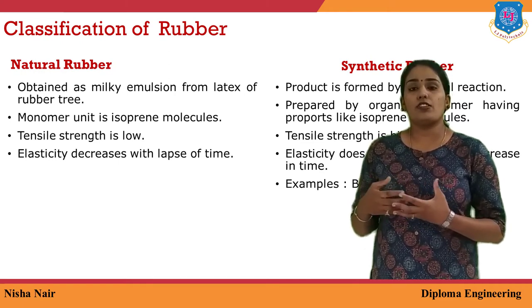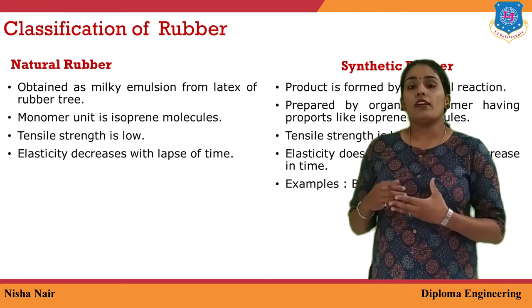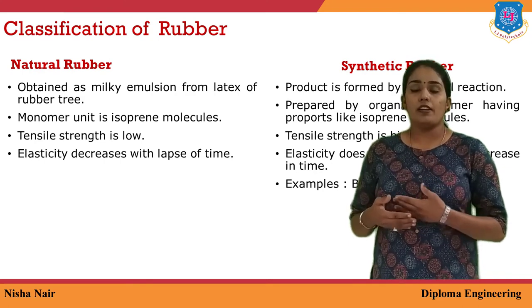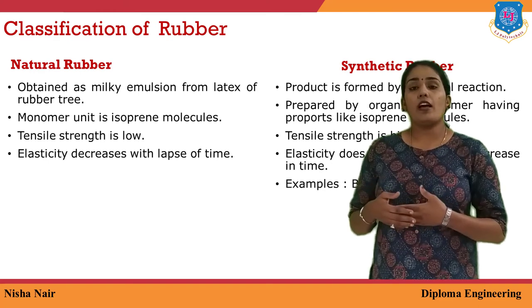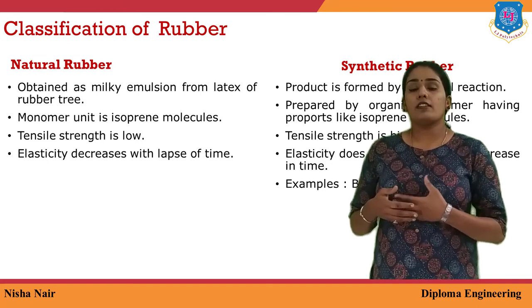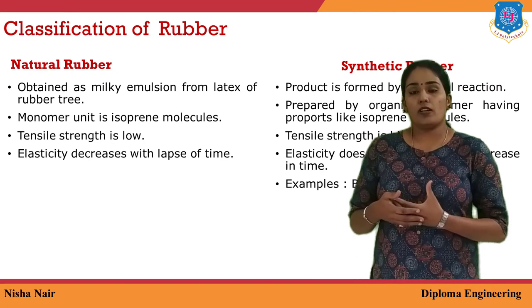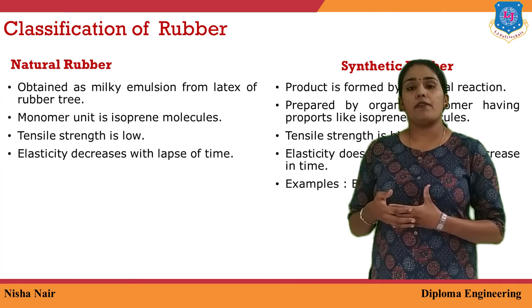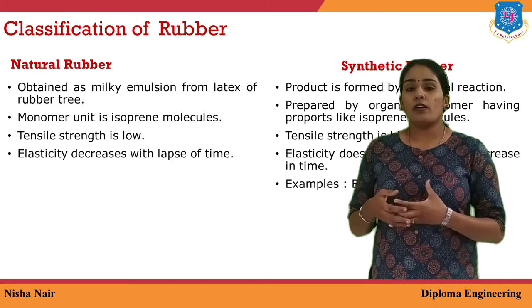There will be no change in the elasticity properties of synthetic rubber even as time passes. So, synthetic rubbers are more tough and more strong compared to natural rubber. Examples for synthetic rubbers are Buna and Buna-S rubbers. The monomer units in Buna and Buna-S rubber include butadiene, styrene, and acrylonitrile. They are completely prepared in the laboratory and give fantastic properties like strength and elasticity, and they are used in a wide range of applications.